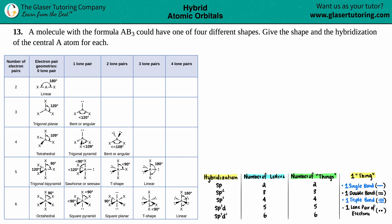Number 13: a molecule with the formula AB3 could have one of four different shapes. Give the shape and hybridization of the central A atom for each. So we have to divide this question up into four different shapes because they want us to give the shape and hybridization of each Lewis structure, which is AB3. I'm only allowed one A as the center and three B's around the atom.